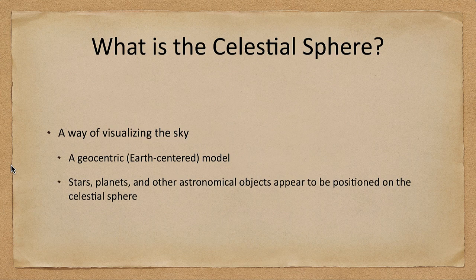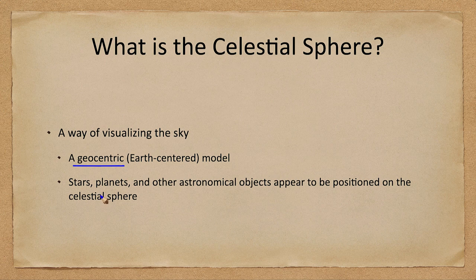This is actually a geocentric model, meaning that it is Earth-centered. While we know that the Earth is not the center of the universe, it is still convenient to use an Earth-centered model here to be able to measure and identify locations of things like stars, planets, and any other astronomical objects, which will appear to be on this celestial sphere.